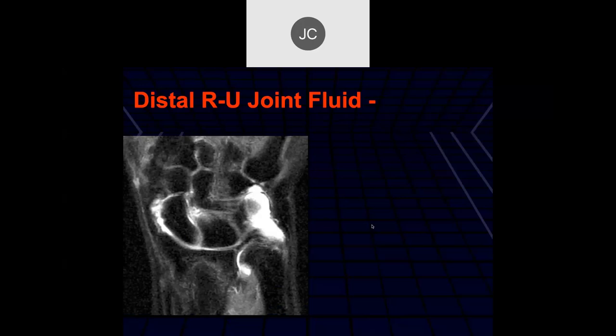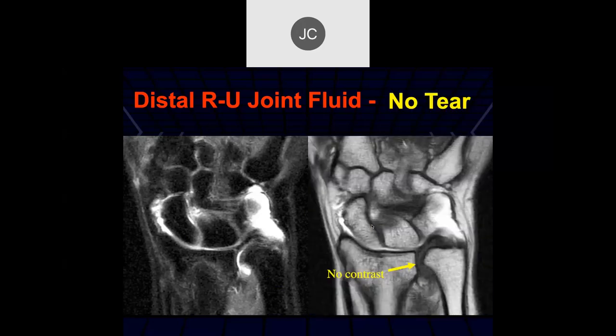Robert, what do you think of this case? Here it does look like there's a little bit of fluid in the DRUJ, but I don't see a definite tear. Now, this is an arthrogram — here's what the T1 weighted image looked like. So it doesn't look like there's contrast there, so I don't think there's a tear.